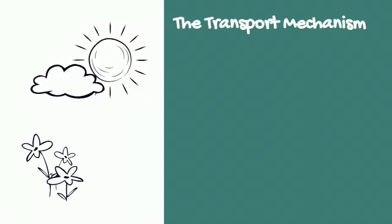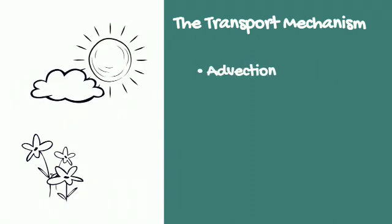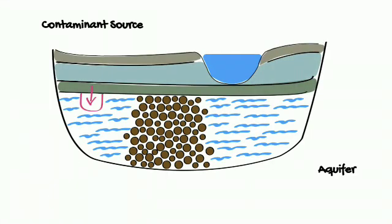The three main types of contaminant transport are advection, diffusion and dispersion. In this video we will demonstrate how a contaminant will be transported through the soil using an aquifer as the main example.